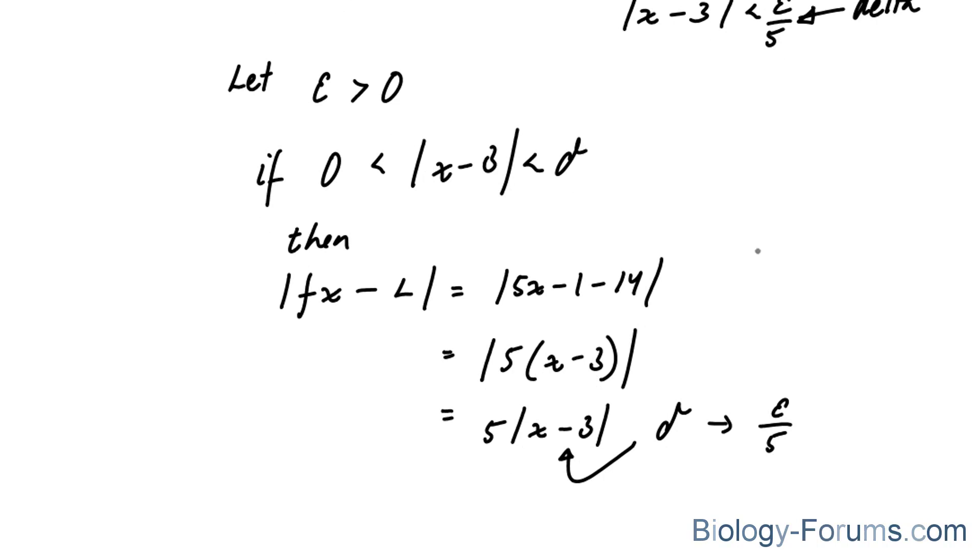And our delta was equal to epsilon over 5. So we have 5 delta, and this can be replaced with epsilon over 5. We end up with 5 times epsilon over 5, and these two cancel out, leaving us with simply epsilon. That proves our limit exists.